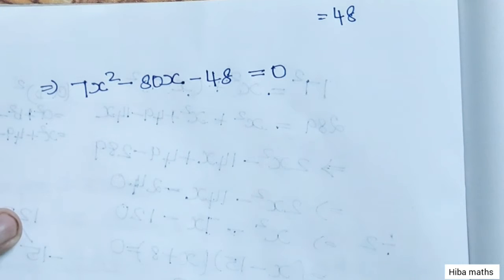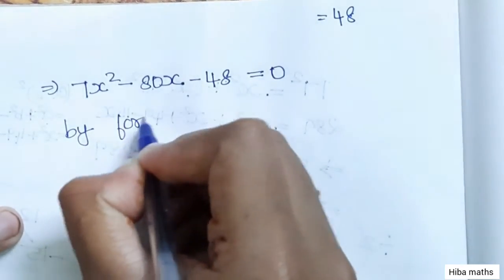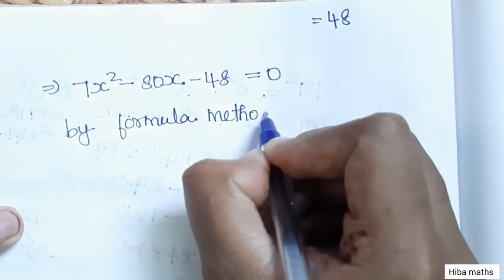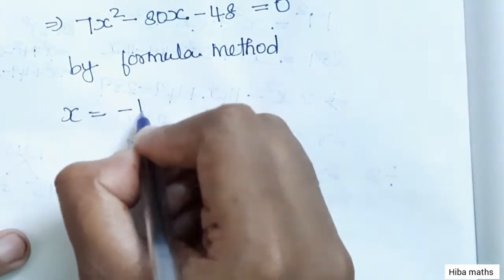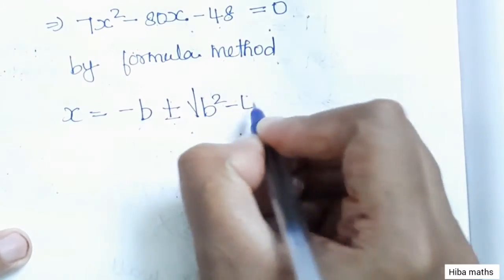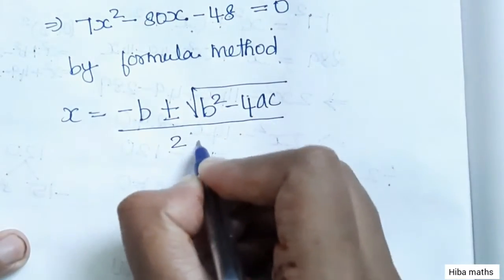We need to use the formula method. By formula method, x = [-b ± √(b² - 4ac)] / 2a.